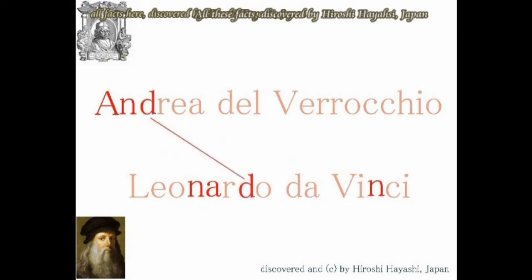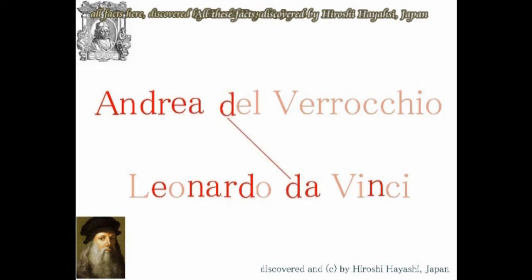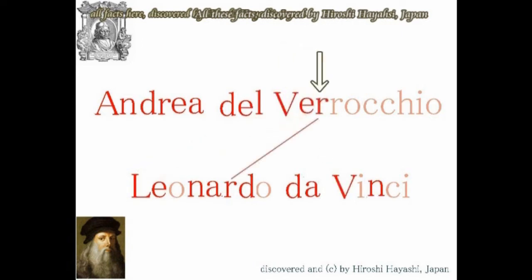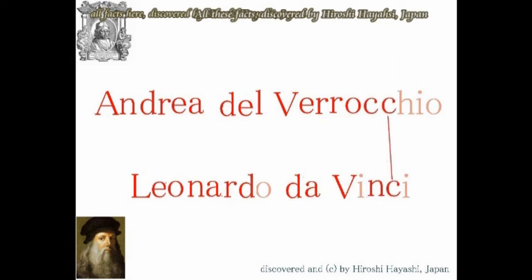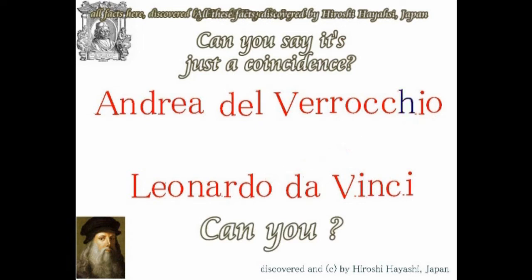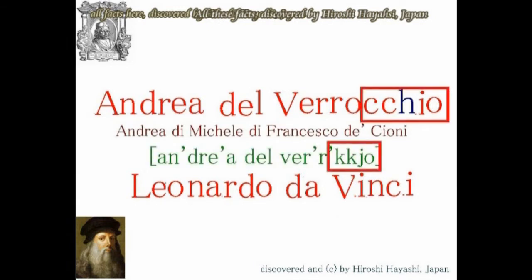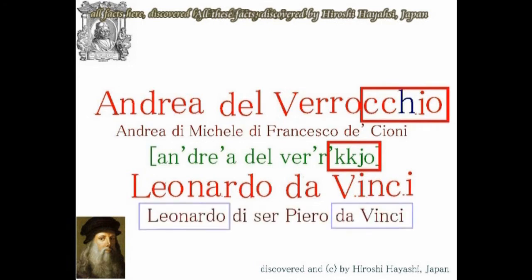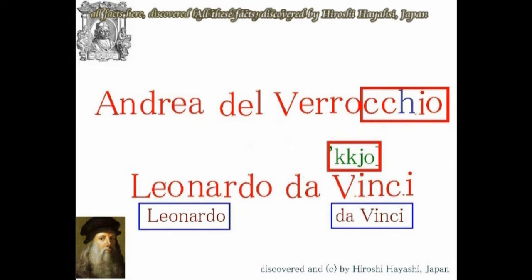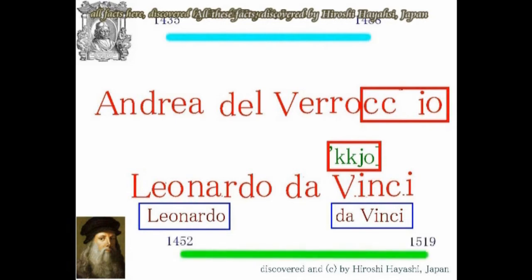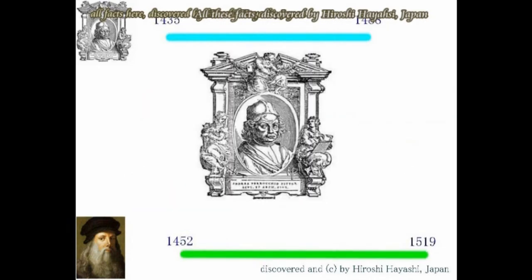これがアンドレア・デル・ベロッキョですが、リオナルド・ダ・ヴィンチという名前も捏造されたものではないかと疑っています。英語名で書いたアンドレア・デル・ベロッキョを並び替えてみると、そのままリオナルド・ダ・ヴィンチとなります。ただ右から3文字目のHだけはリオナルド・ダ・ヴィンチの中にはありません。Hを除けば全く同じです。つまり、アンドレア・デル・ベロッキョという画家の名前の文字を入れ替えてできたのがリオナルド・ダ・ヴィンチということになります。これは偶然ということもあり得ますのでペンディングとしておきます。ベロッキョはダ・ヴィンチよりも17歳年上でした。